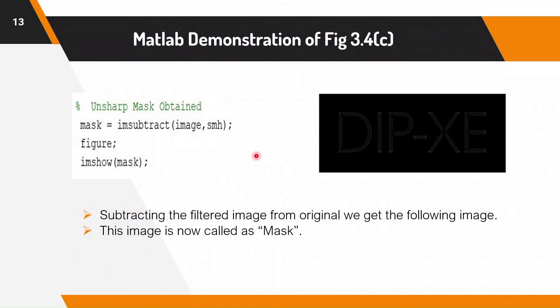We subtract the filtered image from the original image using imsubtract command and we obtain a mask. As you can see, the mask contains the information about the edges of the text.